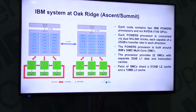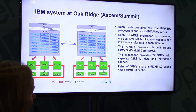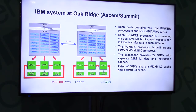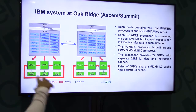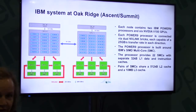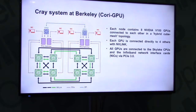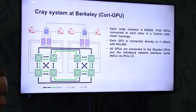Here's the system at Oak Ridge — basically a mini version of Summit, more of an open training system. It had six NVIDIA GPUs and IBM Power 9 on the node, with NVLink capable of fast data transfers. We also used the new Cray system at Berkeley Lab, which has eight NVIDIA V100 GPUs and Skylake CPUs. Those were our two test systems.